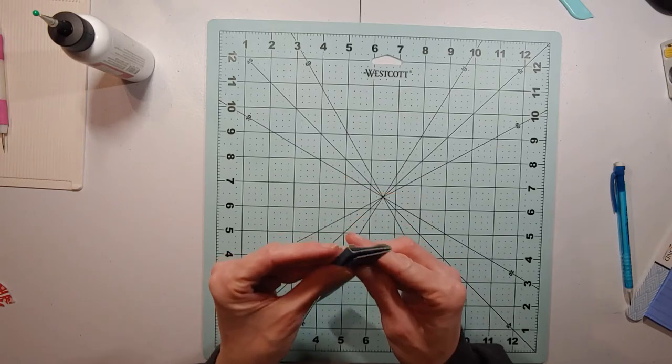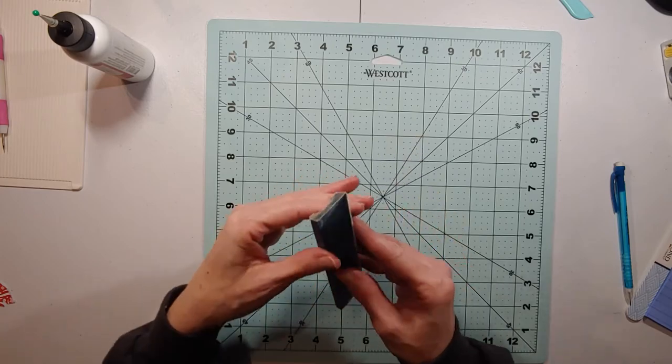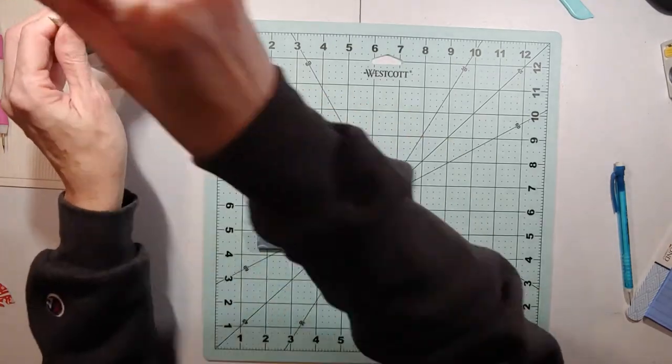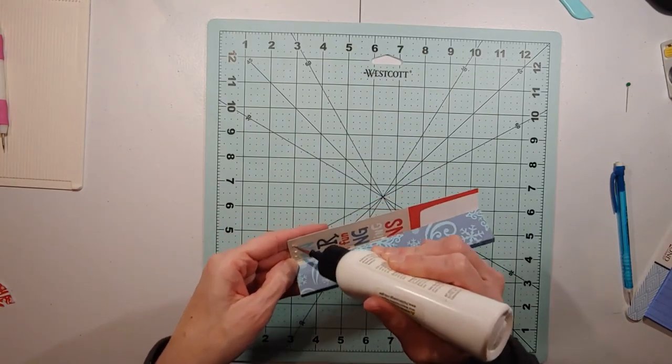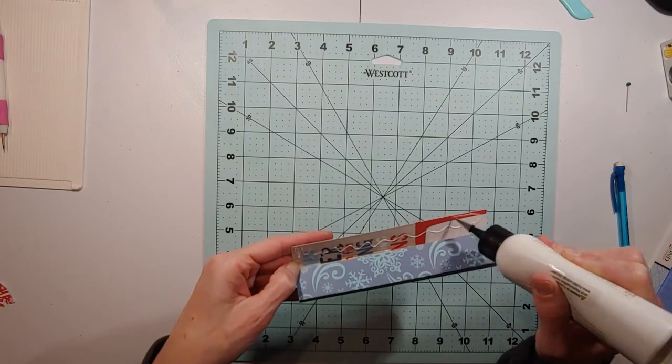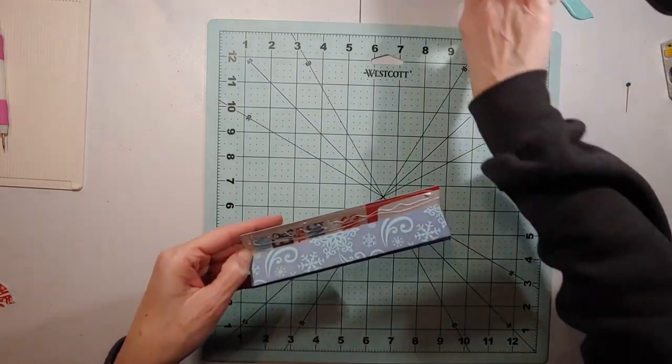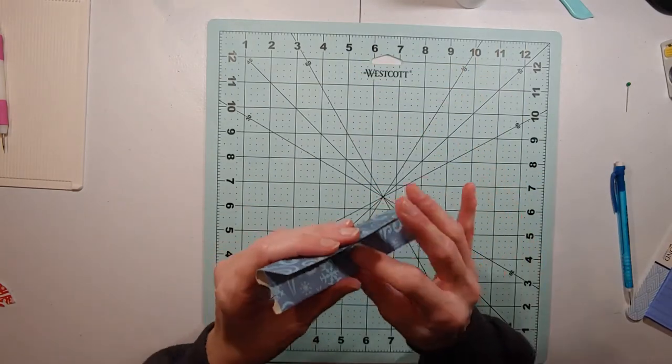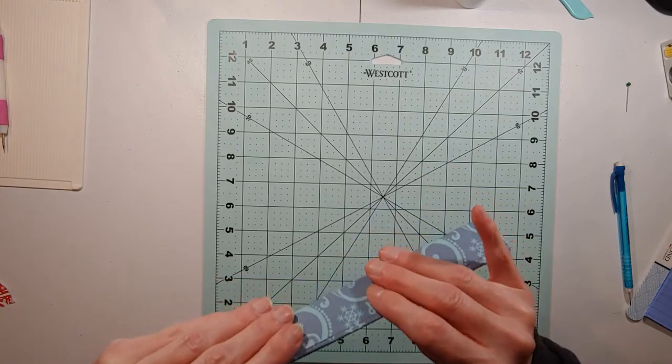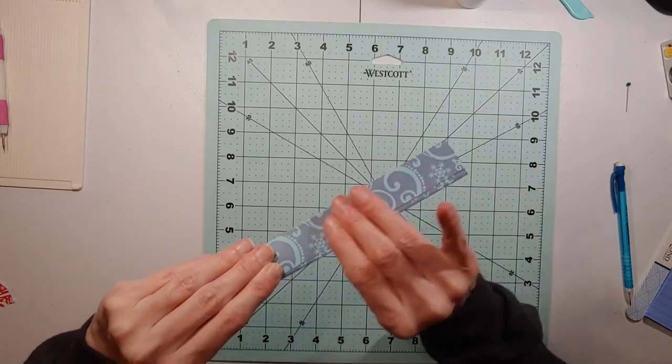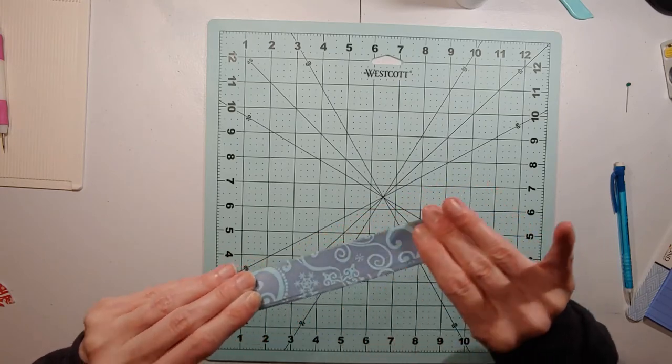So now you can go ahead and either take your tape runner adhesive or you can take glitter glue. And I chose to use glitter glue for this project. So I'm just going to go ahead and put my glitter glue on. And then I'm just going to fold this over and kind of burnish that down with your fingers. Just carefully go up and down.